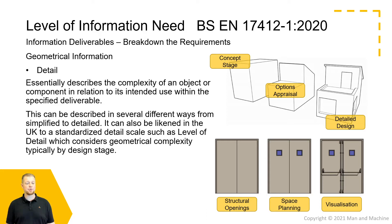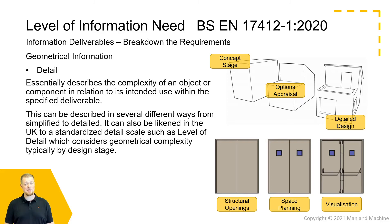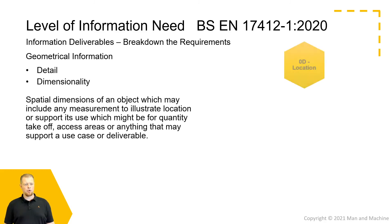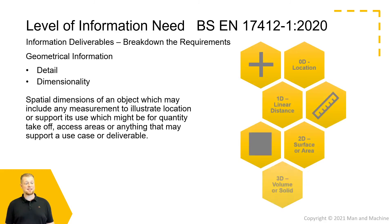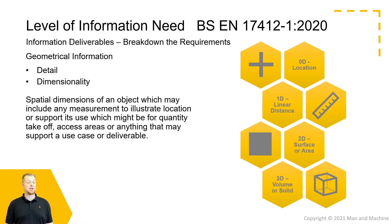As an example, we have three doors, each providing information around a door but each with a different purpose: the first purely from a structural opening point of view, the second looking at space planning and views between two spaces, and the third much more detailed showing visualisation needs. We also need to consider the dimensionality of those objects and the model itself — everything from pure location information, through surfaces, areas and linear distances, and then into volumetric spaces and 3D models.